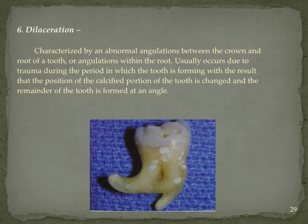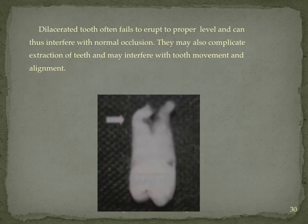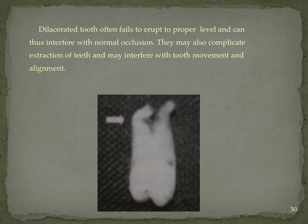Dilaceration is a condition where injury during root formation causes the calcified portion of the tooth to change direction, and the remainder of the tooth forms at an angle. Such teeth are problematic because of the marked angulation of the root — they will fail to erupt to a proper occlusion level, and even extraction is very difficult due to the inverted root, requiring significant bone contact and causing trauma during removal.